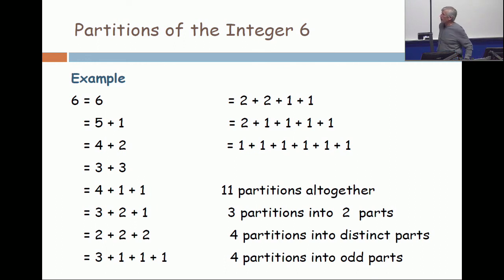So 6, 5 plus 1, 4 plus 2, and then 3 plus 2 plus 1. I guess by coincidence, there are also 4 partitions in which all the part sizes are odd. When people say partitions into odd parts, they mean partitions where all the parts have size which is odd. 5 plus 1, 3 plus 3, 3 plus 1 plus 1 plus 1, and the last one, all 1s.